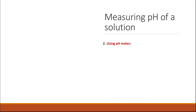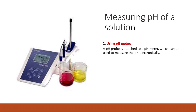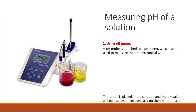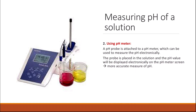To specifically and accurately measure the pH of a solution, you can use a pH meter. The pH meter has a pH probe which is immersed in your solution, and a digital screen gives you the exact value of the pH.